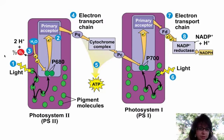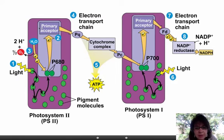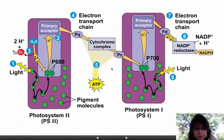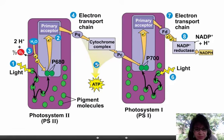Going back: light hits these photosystems and ejects the electrons. Now those electrons are going to flow down an electron transport chain, not unlike the electron transport chain in the mitochondria. It's embedded in the thylakoid membrane, it pumps hydrogens, and the end result is that you make ATP. So we've made some ATP.